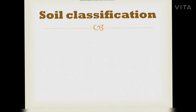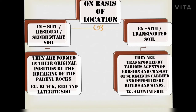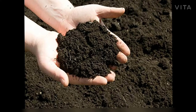Our next topic is soil classification. On the basis of location, soil is classified into two types: in-situ (residual or sedentary) soil and ex-situ (transported) soil. In-situ soils are formed in the original position by the breaking of the main rocks. Examples include black, red, and laterite soil, as shown in the picture.